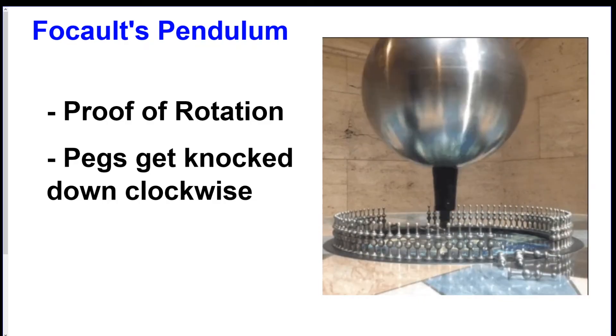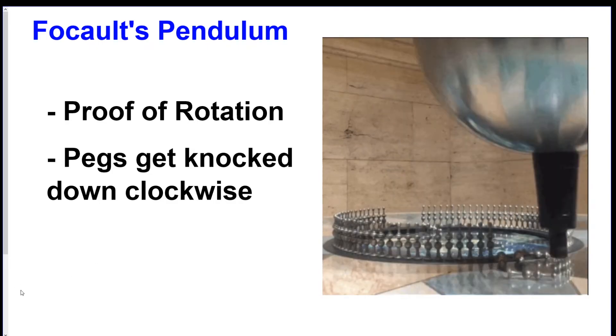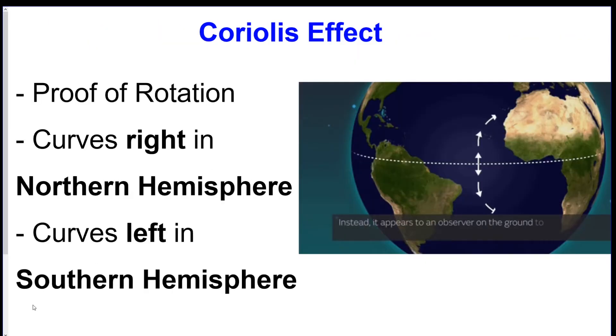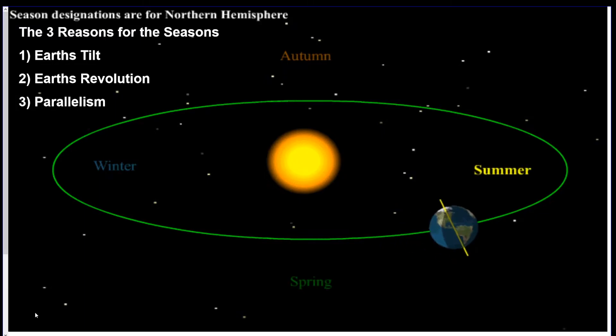There are also a couple of facts that you got to know for the Coriolis effect which include it's the second proof of rotation and the wind and water will curve right in the northern hemisphere and to the left in the southern hemisphere because the Earth is rotating. So those were just two honorable mentions on the way to the reasons for the seasons.